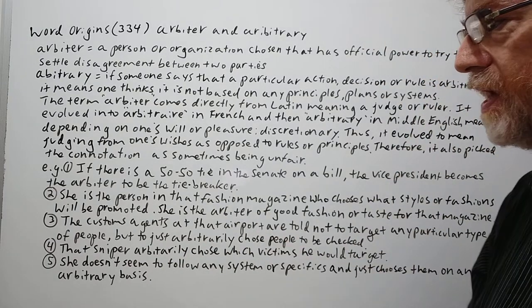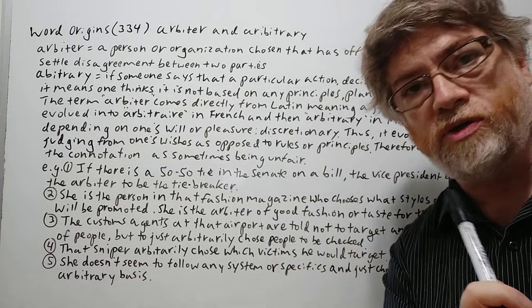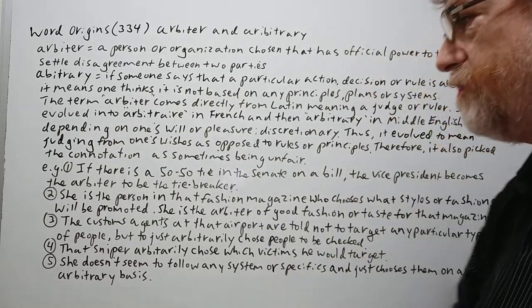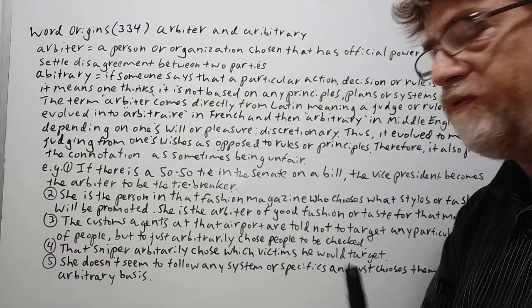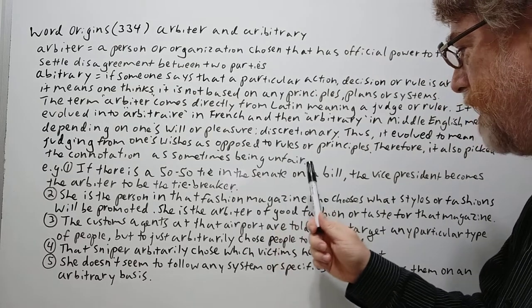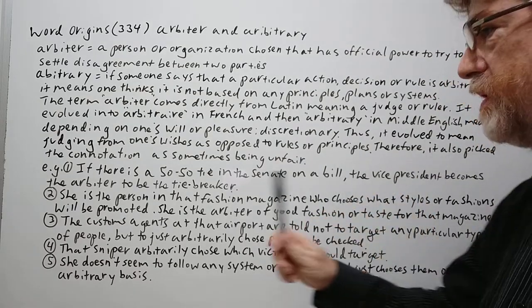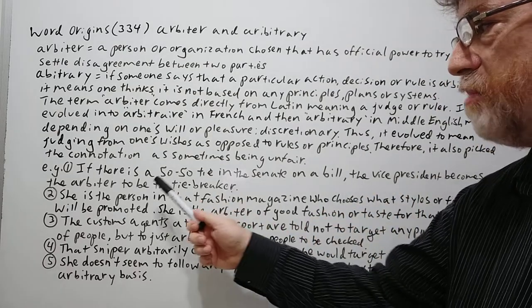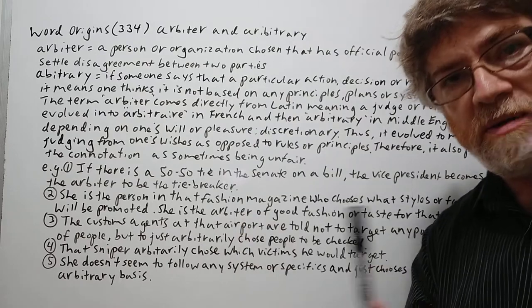We have five examples to show just how it's used. Here's the first one: If there is a 50-50 tie in the Senate on a bill, the vice president becomes the arbiter — the tie breaker.